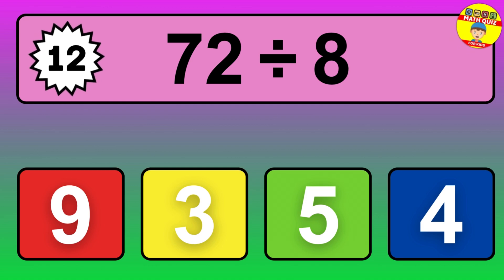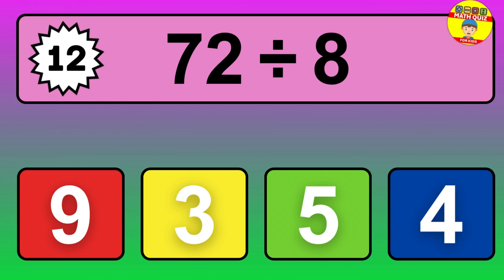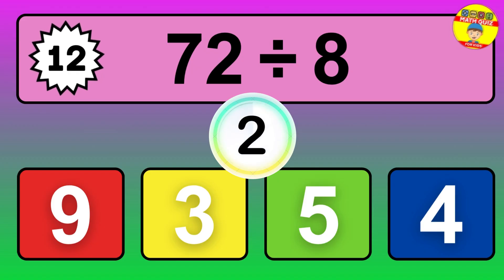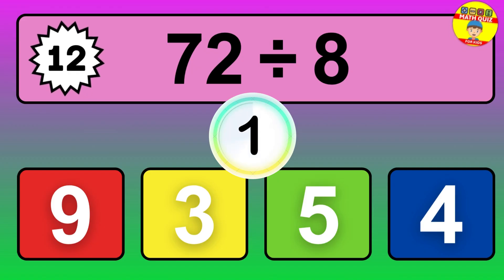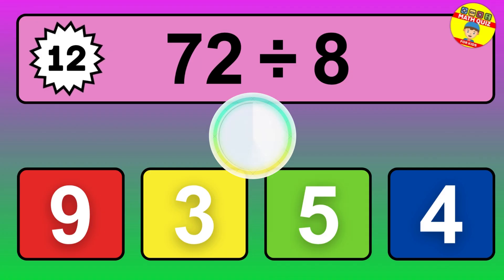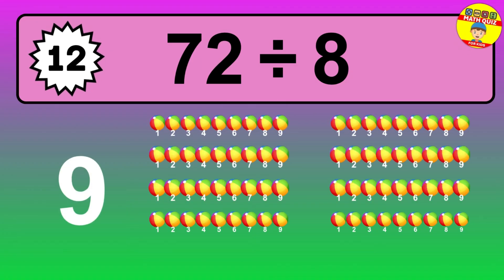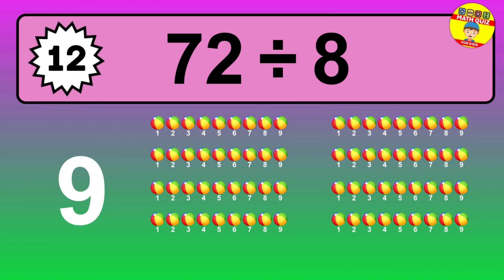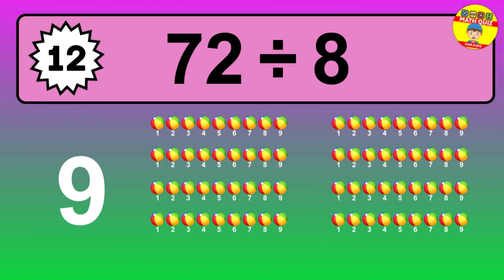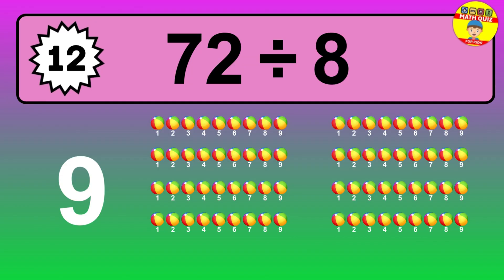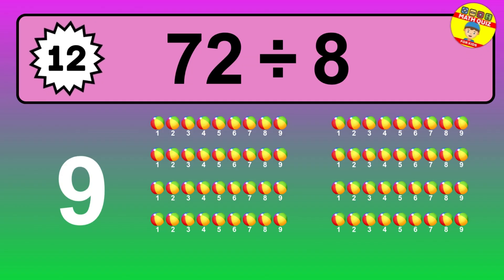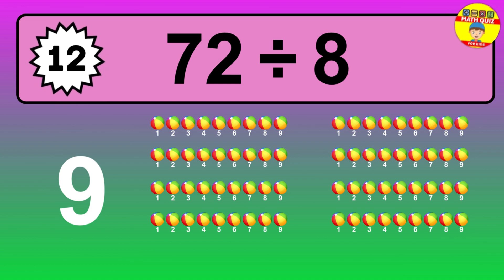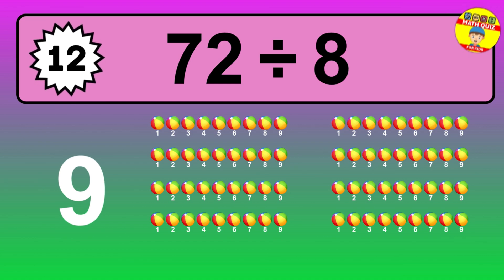What is 72 divided by 8? Imagine this — you have 72 objects to divide into groups of 8. How many groups can you make? Let's think about it. Ready to find out? Let's break it down. Let's imagine you have 72 objects. Can you picture them lined up? Now think about splitting them equally into smaller groups.